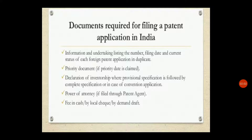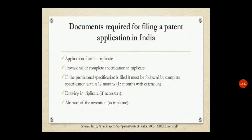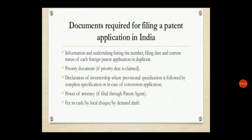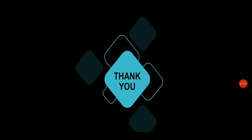In summary, for filing a patent application in India you must submit: an application form in three copies; a provisional or complete specification in three copies (with complete specification due within 12 months of provisional); drawings and abstract in duplicate; a list of foreign patent applications in duplicate; a priority document; a declaration of inventorship; a power of attorney; and an application fee by cheque or demand draft.